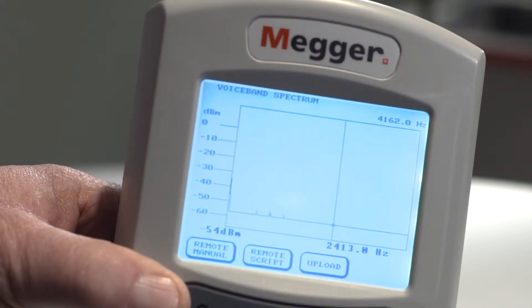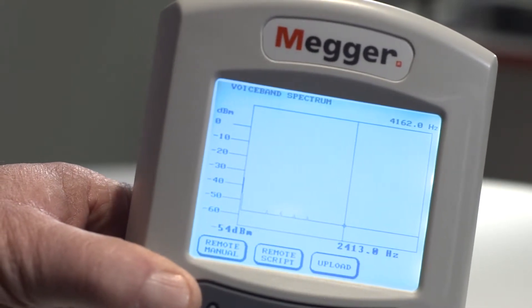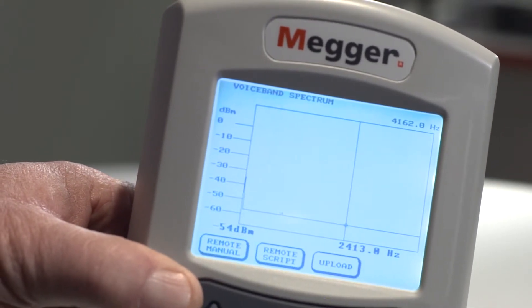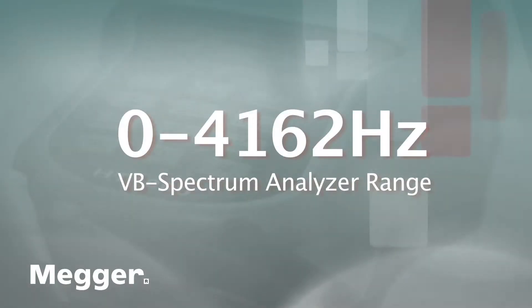In this segment, we'll examine the Voiceband Spectrum Analyzer with the HT1000-2. The Voiceband Spectrum Analyzer identifies the frequency and amplitude measured in dBm of an input signal in the range of 0 to 4162 Hz.